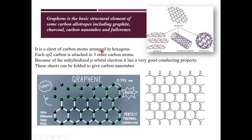Graphene is a sheet of carbon arranged in hexagons where each carbon is sp2 hybridized and attached to three other carbons. You can see the double bonds indicating the free electron from the unhybridized p orbital, which is responsible for its very good conducting property. It is quite flexible yet tough, and because of this flexibility it can be folded to give carbon nanotubes.